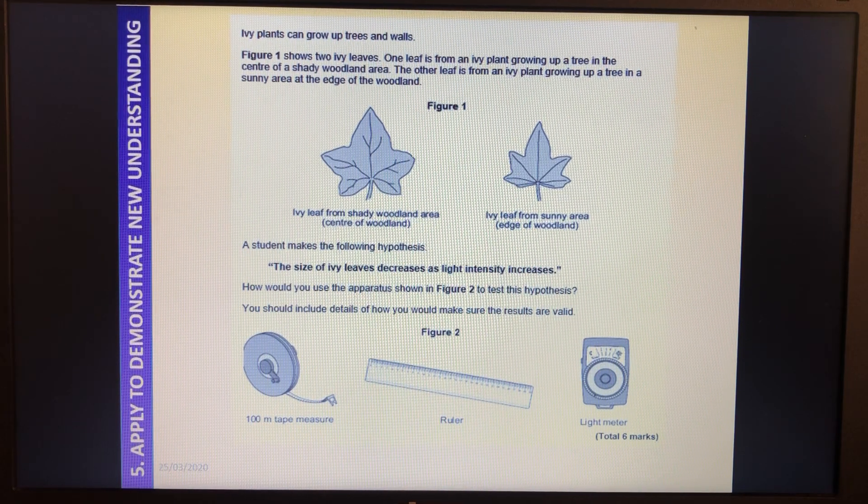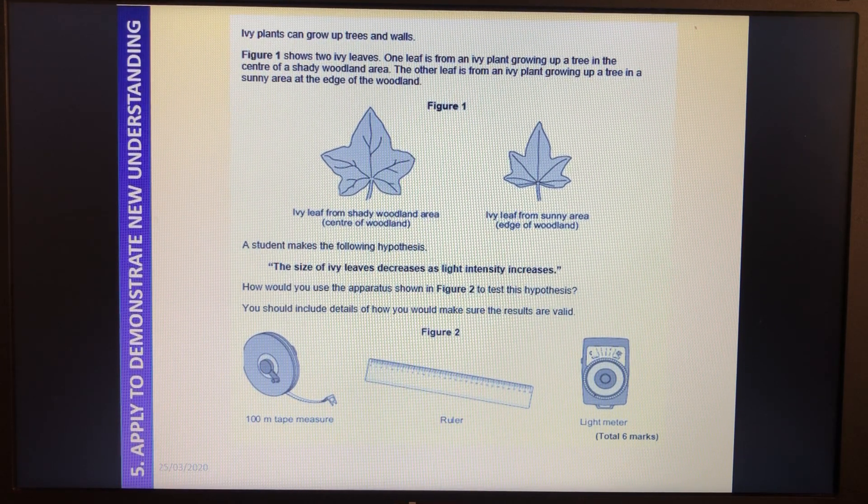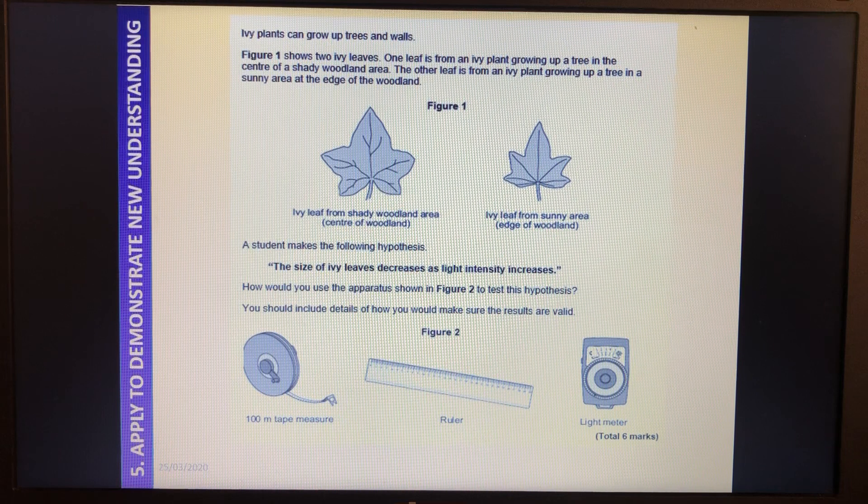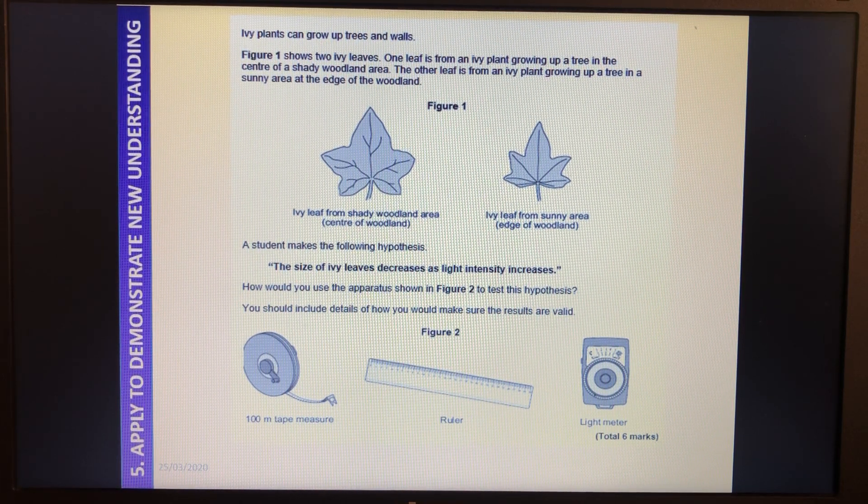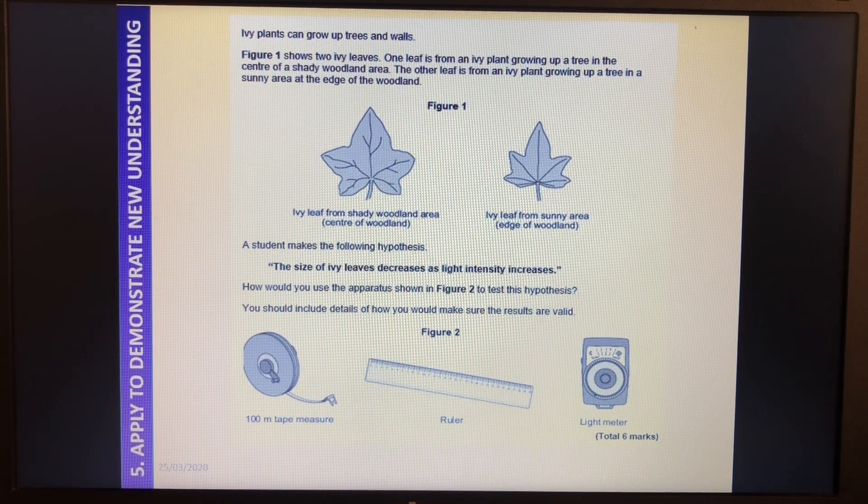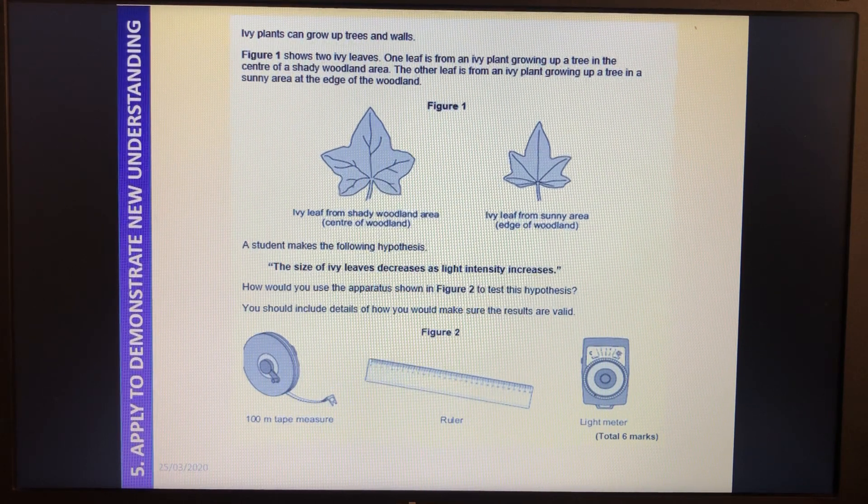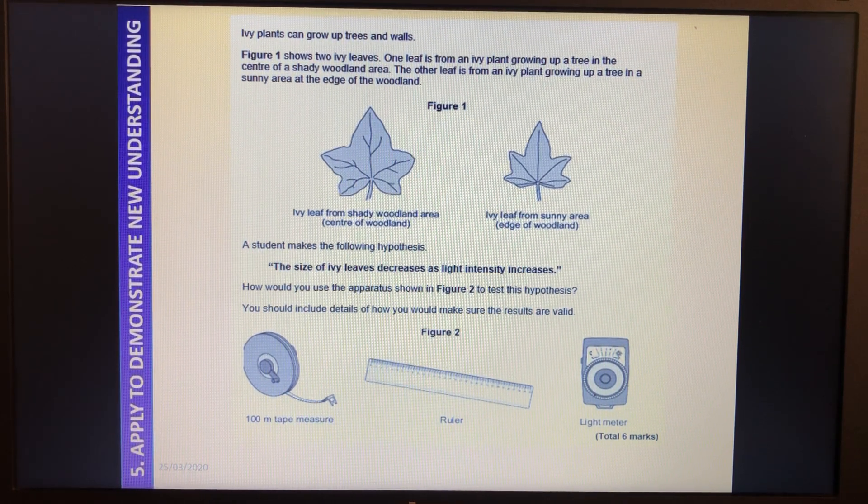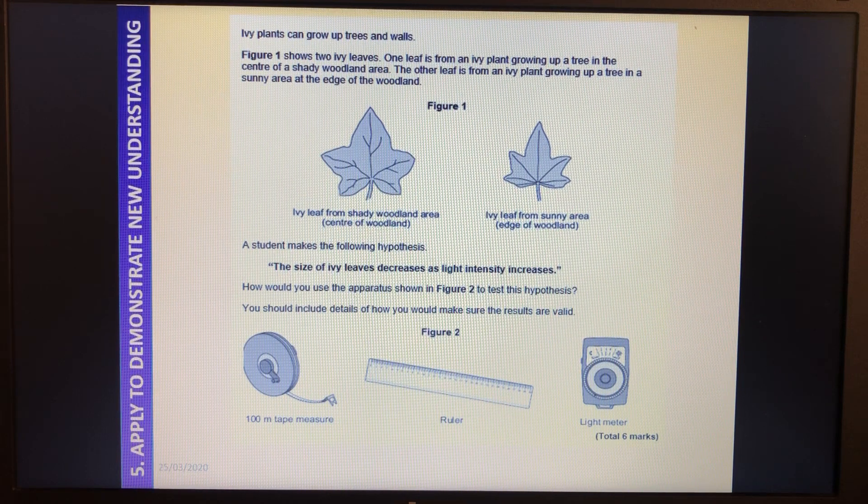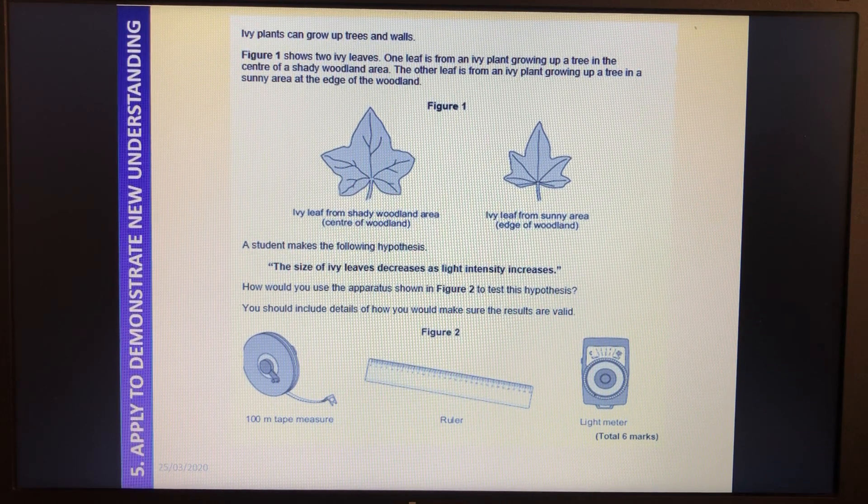A student makes the following hypothesis. The size of the ivy leaves decreases as light intensity increases. And that matches up with what they've said, what they've got as their two leaves there. How would you use the apparatus, fancy word for equipment, shown in figure two to test this hypothesis? You should include details of how you would make sure the results are valid. That word valid creeping in. So that means we've got to talk about being accurate, being precise where needed, and being reliable.